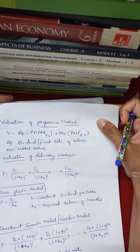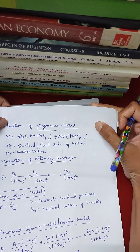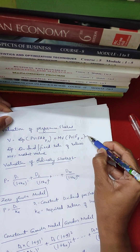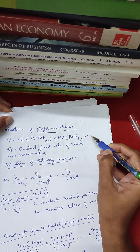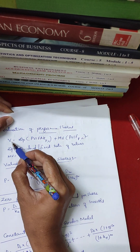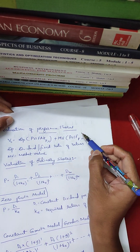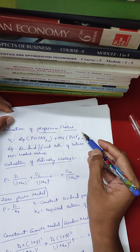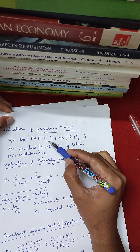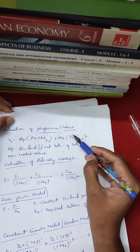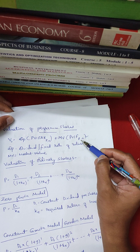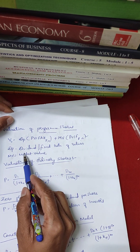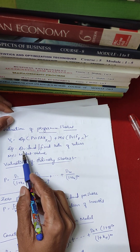The valuation of preference shares formula is the same as for bonds. V0 is equal to DP multiplied by PVIF(KP,N) plus MV multiplied by PVIF(N). DPN is the dividend — dividend is nothing but the interest payment.